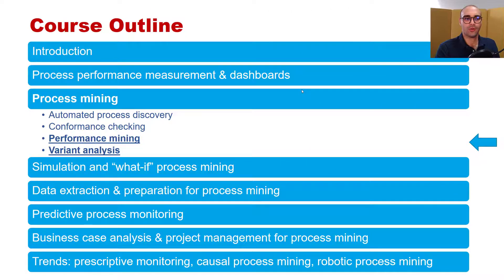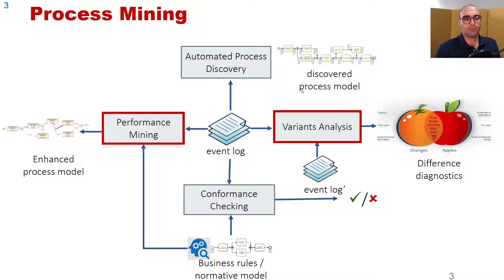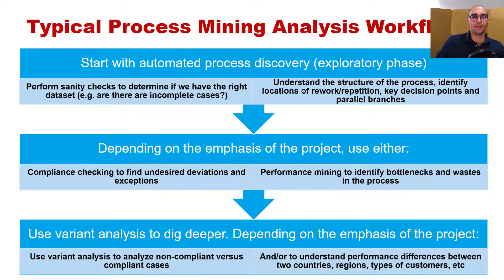So far in the course we have been explaining capabilities of business process mining. We will cover the combination between performance mining and variant analysis — performing performance mining to discover certain bottlenecks or wastes in the business process, and comparing how the performance of the process differs with and without those bottlenecks.